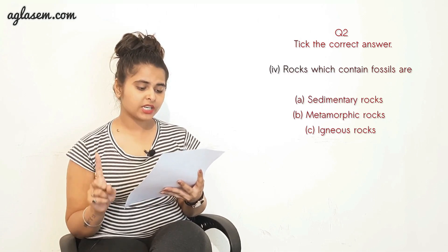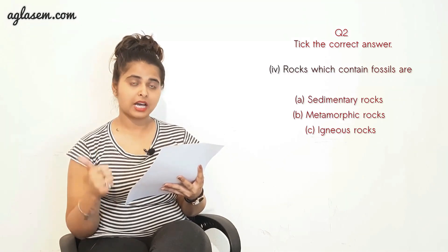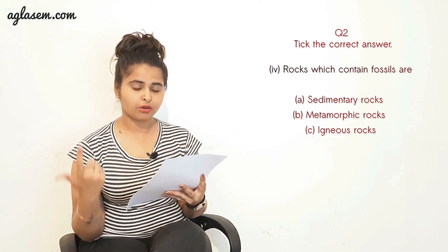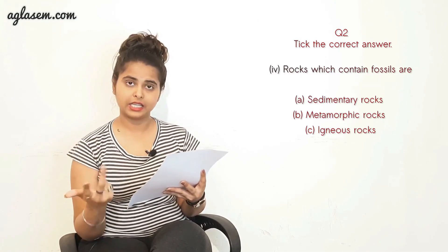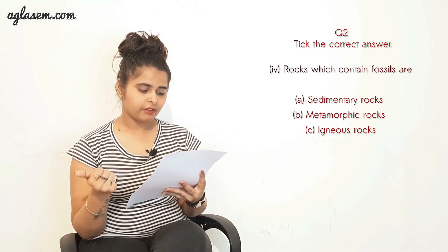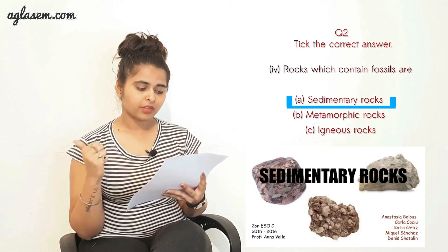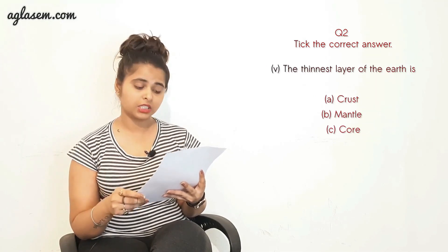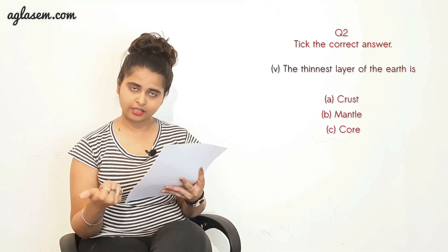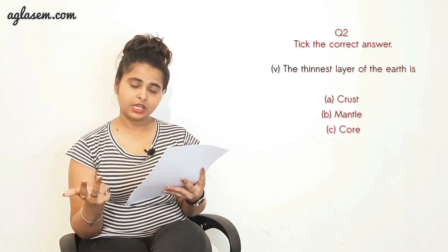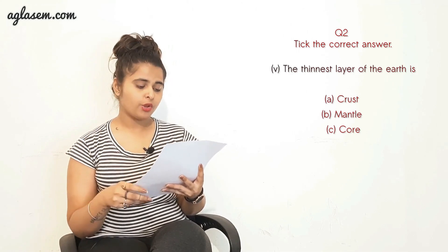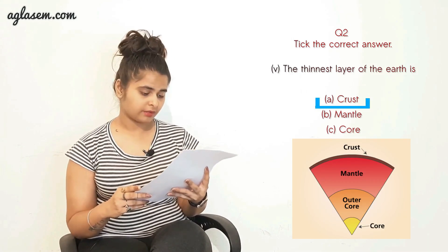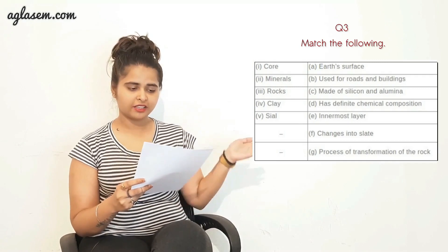Part four: Rocks which contain fossils are (a) sedimentary rock, (b) metamorphic rock, or (c) igneous rock. The answer is (a) sedimentary rock. Part five: The thinnest layer of the earth is (a) crust, (b) mantle, or (c) core. The answer is (a) crust.